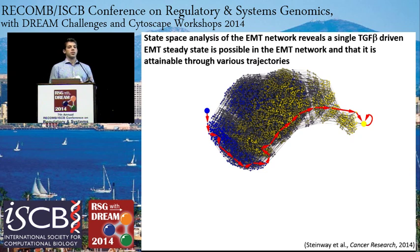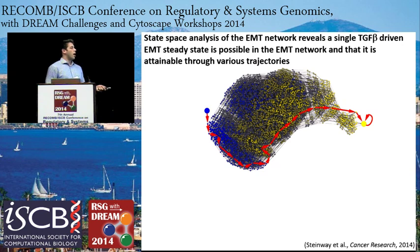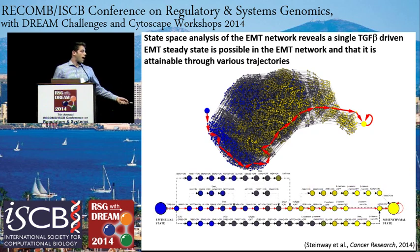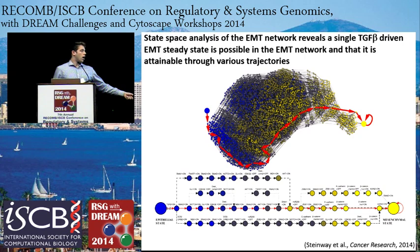The next thing we were curious about was: what are all the possible steady states that our model could reach when you treat an epithelial cell with TGF-beta? We saw that when TGF-beta is the only dysregulation, a single steady state is possible through many trajectories—we have so many trajectories because we use an asynchronous updating scheme. The most common trajectory is shown in red, and looking at the five most common trajectories from the epithelial to the mesenchymal steady state, we see that they share a lot of similar paths through our network.